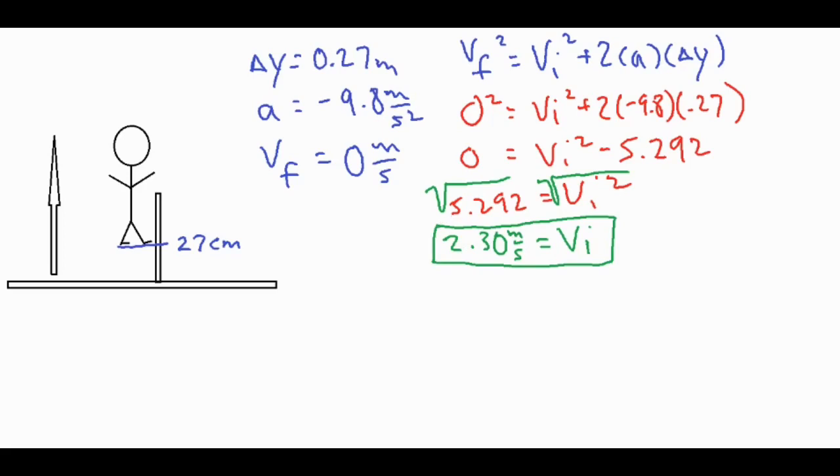So we plug those numbers in and basically got the product of these three numbers, which give us negative 5.292, add it to both sides, square root of both sides, and that gives us 2.3 meters per second. So that is their takeoff speed off the ground that they're taking off with.